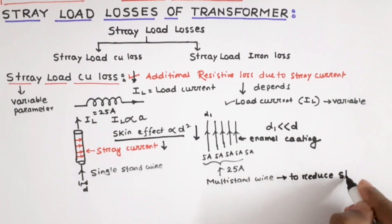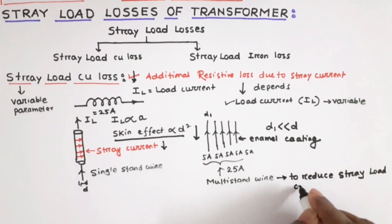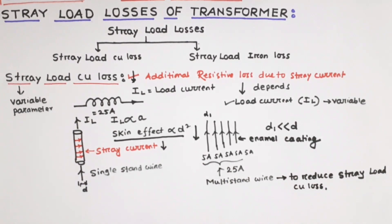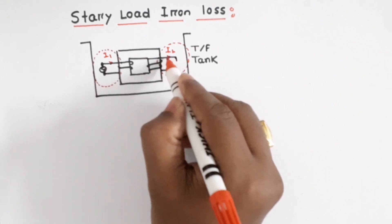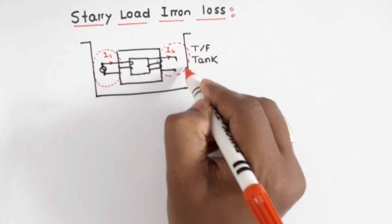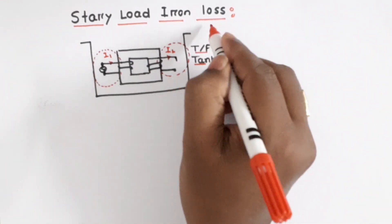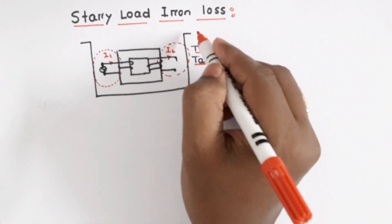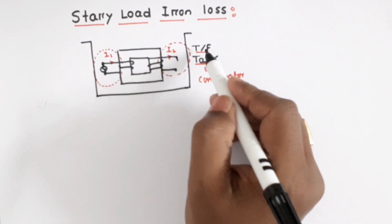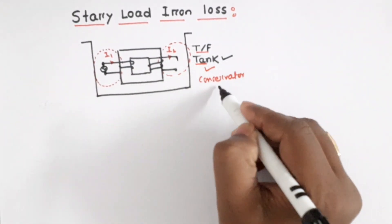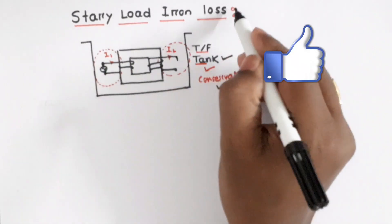Now let us start with stray load iron loss. Whenever current is flowing through the transformer winding, a leakage flux will be produced. Some of this leakage flux will link with the transformer tank, transformer conservator, and other parts. The losses in these different auxiliary parts — like the transformer tank and conservator — due to this leakage flux are called stray load iron loss.